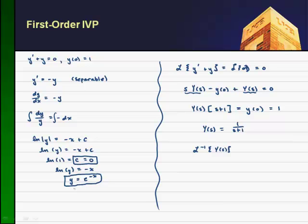Of course, that'll just give you the function y as a function of time. I want to take the inverse Laplace transform of 1 over s minus negative 1.